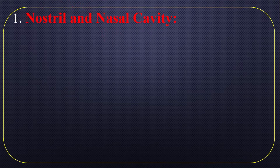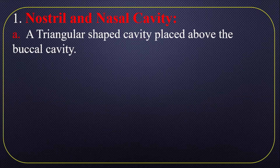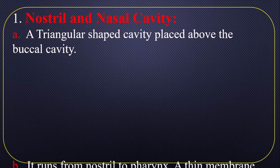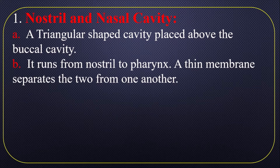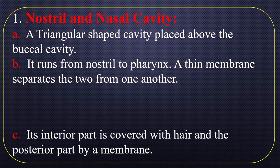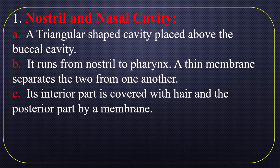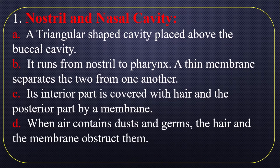Nostril and nasal cavity. A triangular-shaped cavity is placed above the buccal cavity. It runs from the nostril to the pharynx. A thin membrane separates the two sides from one another. The interior part is covered with hair and the posterior part by membrane. When air contains dust and germs, the hair and the membrane obstruct them.